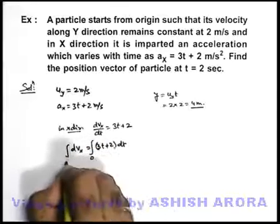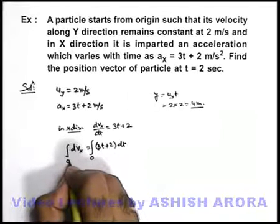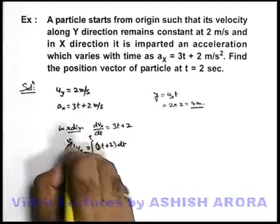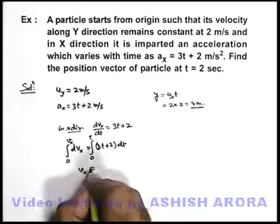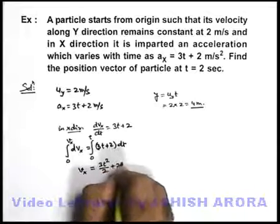With limits at t equal to zero velocity in x direction was zero, as we are assuming particle was started from rest. At a general time t the particle velocity becomes vx. So on integrating we'll get vx = 3t²/2 + 2t.